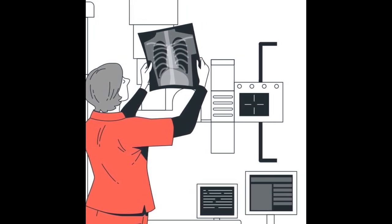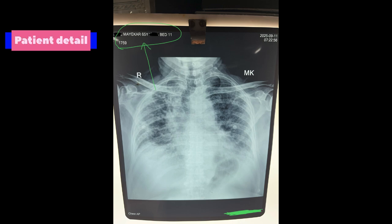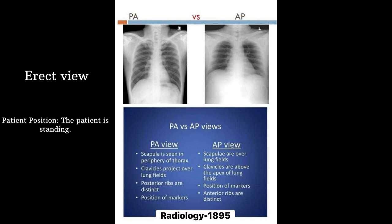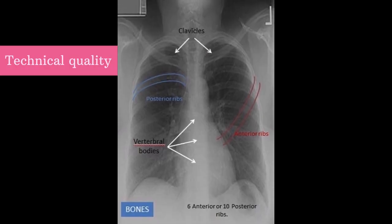Before interpreting any chest X-ray, always do these checks. Check for patient details — name, age, and date. Check film orientation: PA or AP views, i.e., posterior-anterior or anterior-posterior, and whether the patient is in erect or supine position. For technical quality, check for rotation — the medial ends of the clavicle should be equidistant from the spinous process. On an inspiratory chest X-ray, you should see 6 anterior or 10 posterior ribs, and for exposure, the spine should be just visible behind the heart.